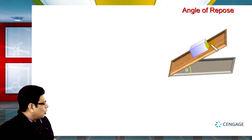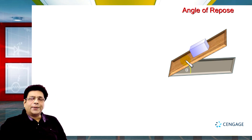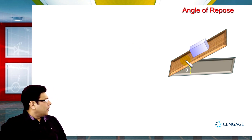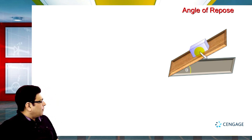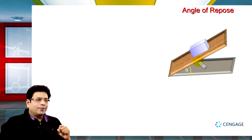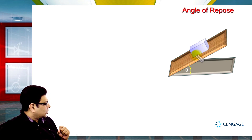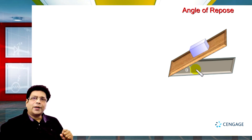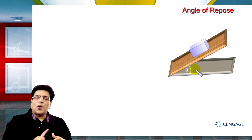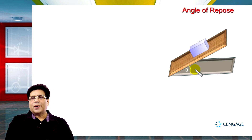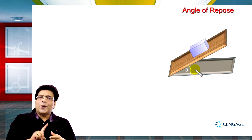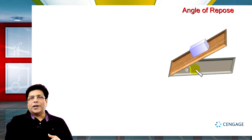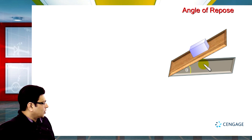So, this angle theta is the angle at which this block just starts sliding. In this case, we draw a free body diagram — we have the weight and a contact force. The contact force has two components: normal reaction and friction force.